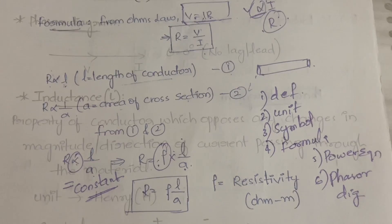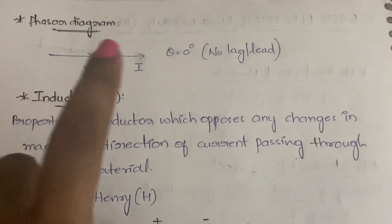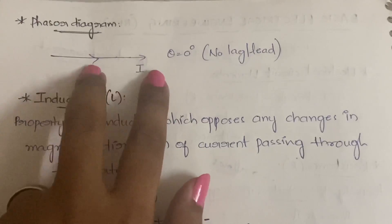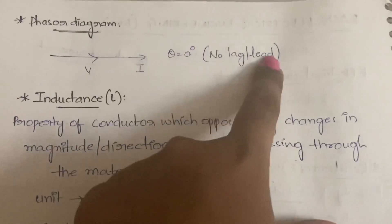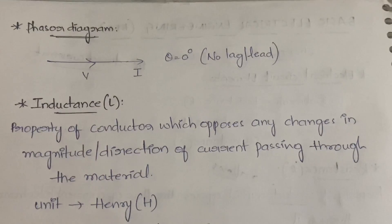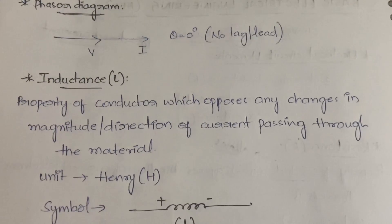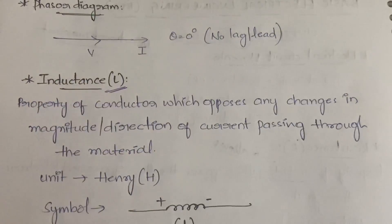For the phasor diagram of resistance, voltage and current both overlap with each other — there is no lag or lead, and theta equals zero degrees. You will better understand lag and lead when we cover inductance and capacitance next.